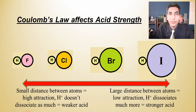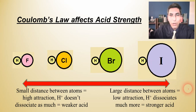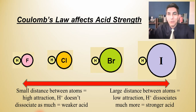When we talk about why acids are strong or weak, this goes into Coulomb's law, which we've already learned. Here I have a diagram of four hydrogen halides: hydrogen bonded to fluorine, chlorine, bromine, and iodine. Three of those are strong acids, as I just told you, and we've already learned that in this course.